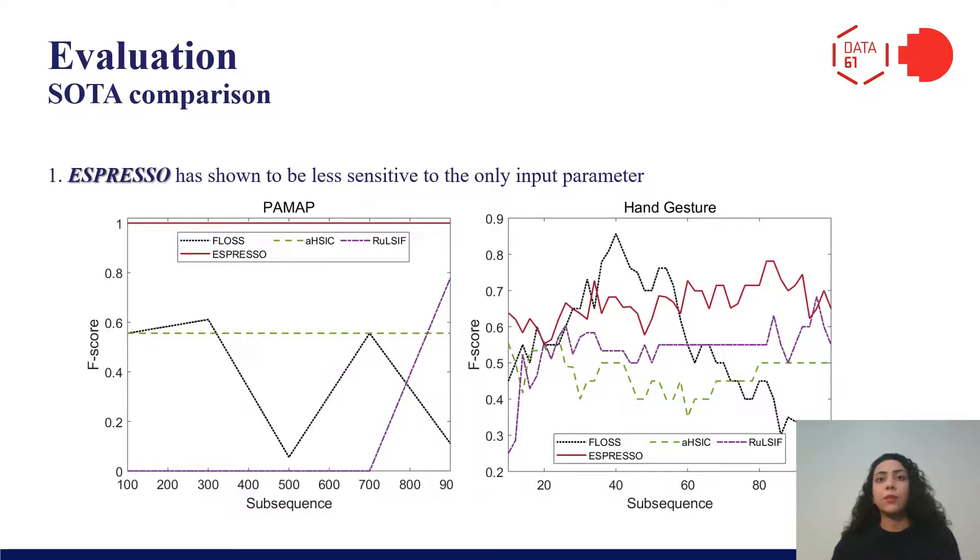First of all, we showed that the performance of our method is less dependent on the only input parameter, which is the length of subsequence. Here, we compare sensitivity of Espresso on each of the benchmarks across PAMAP and hand gesture datasets.